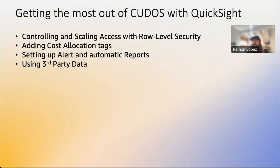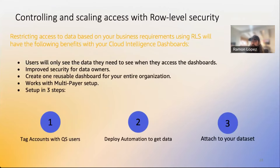Now let's talk about how QuickSight can help you get more out of CUDOS. There are some core QuickSight features you can use. We'll cover row-level security, tags, alerts and report distribution, and using third-party data. First, row-level security: CUDOS has data on all your accounts and services, but in most cases you don't want to give everyone access to everything.